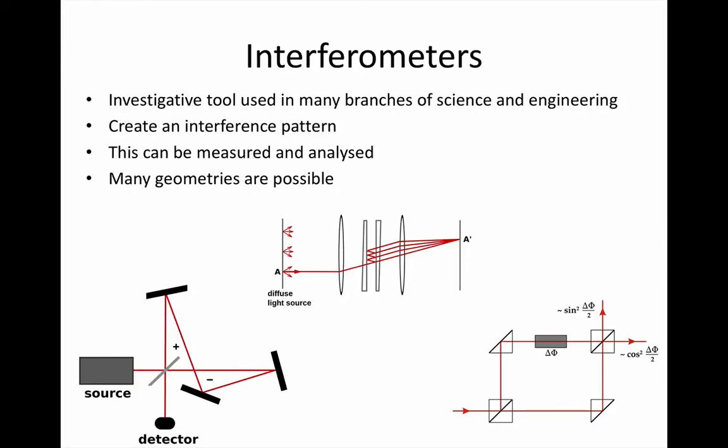Interference patterns show up very small path length differences as bright and dark patches, whose spacing can be measured. Because they show up tiny differences in a fraction of wavelength, and wavelength is a very small amount for light, they're often used for very precise measurements.